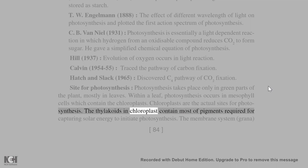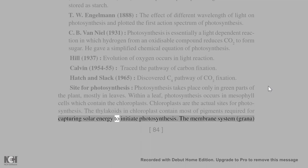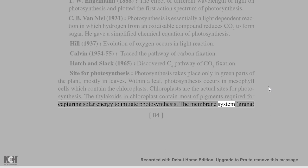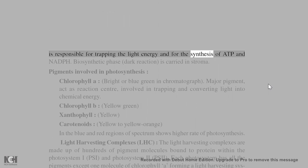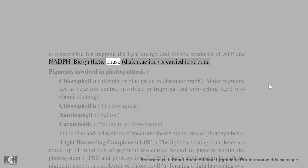The thylakoids in chloroplast contain most of the pigments required for capturing solar energy to initiate photosynthesis. The membrane system (grana) is responsible for trapping the light energy and for the synthesis of ATP and NADPH. Biosynthetic phase (dark reaction) is carried in stroma.